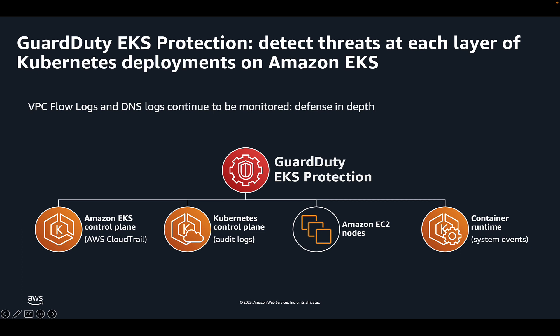When you enable EKS audit log monitoring, GuardDuty immediately begins to monitor Kubernetes audit logs from your Amazon EKS clusters and analyze them for potentially malicious and suspicious activity. It consumes Kubernetes audit log events directly from the Amazon EKS control plane logging feature through an independent and duplicative stream of flow logs. This process does not require any additional setup or affect any existing Amazon EKS control plane logging configurations that you might have.